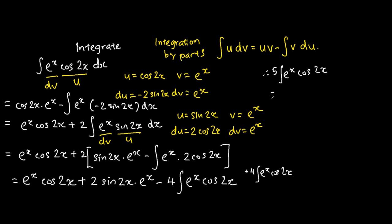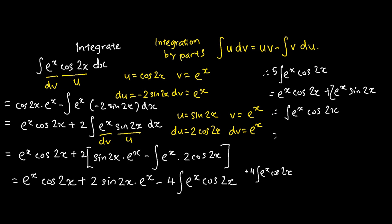This is equivalent to e to the power of x cosine 2x plus 2 e to the power of x sine 2x. Hence, the integration of e to the power of x cosine 2x is simply equivalent to e to the power of x cosine 2x plus 2 e to the power of x sine 2x, and the whole thing divided by 5. And of course, don't forget plus c.